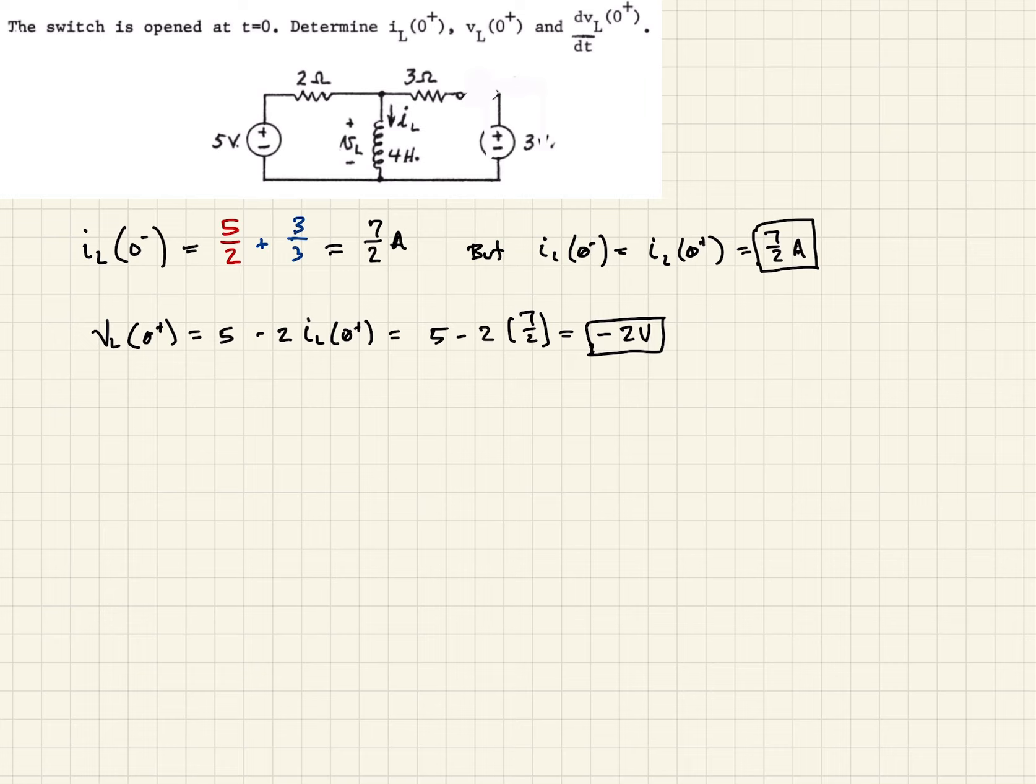So now we have our expression for the current right after and the voltage right after the switch opens in the inductor. So now with the switch open, we can write an expression around that voltage loop.